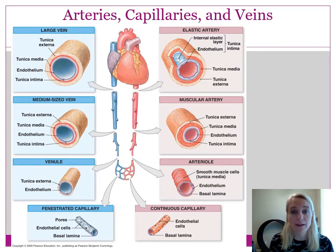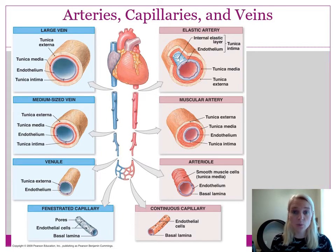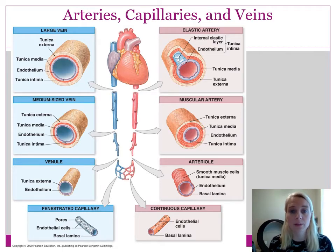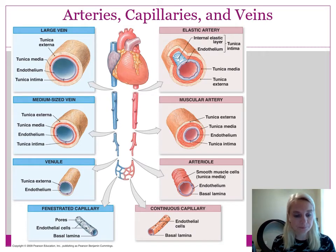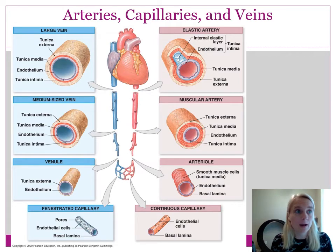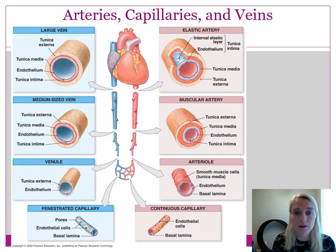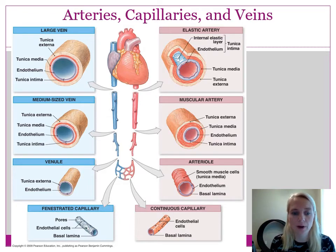Next to continuous capillaries, we have fenestrated capillaries, found only in certain locations where you need a lot more exchange. Fenestration means these simple squamous cells making the endothelium have pores in them — holes that are purposeful, designed to increase the movement of things across the capillary. Capillary beds then drain into veins, starting with a venule — a small vein still located within the organ itself — which lacks a tunica media, having just endothelium and tunica externa.